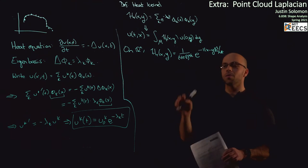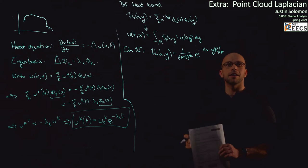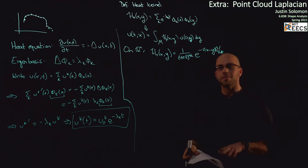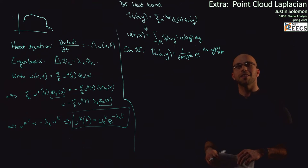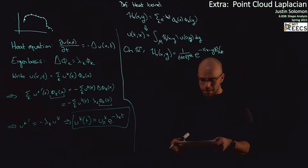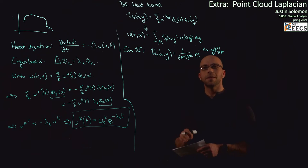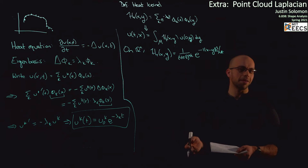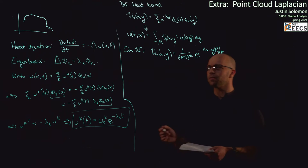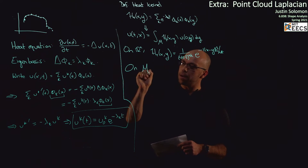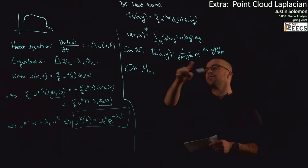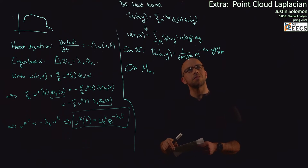Now we're going to use this heat kernel formula to motivate an approximation of the Laplacian of a manifold that can be computed from a point cloud — which is pretty nice because point clouds are the kind of thing we get as input in a messy machine learning application. What Belkin and Yogi make use of is a useful asymptotic formula. I'm going to do a little bit of hand-waving, but this formula is actually believable: on a manifold M of intrinsic dimension m, the heat kernel is well approximated by the Euclidean heat kernel so long as time is small.